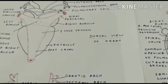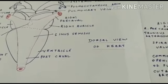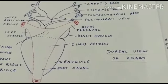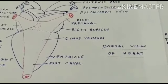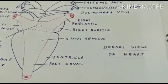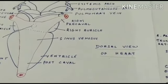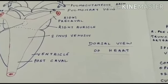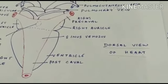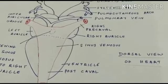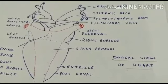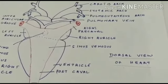When the sinus venosus fills up with blood — this is the deoxygenated blood, received through the precava and postcava — this deoxygenated blood is poured into the right auricle through the sinoauricular valve. The left auricle receives blood through the pulmonary vein, which opens into the left auricle by an aperture.